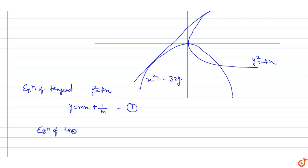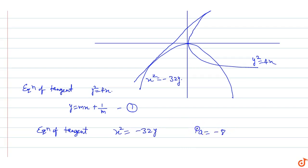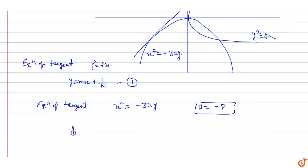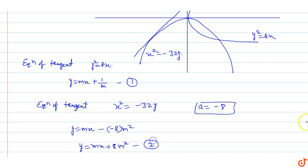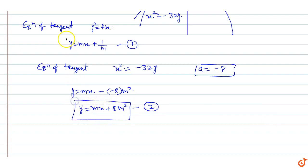The equation of tangent to the parabola x² = -32y is y = mx - am², where a = 8, giving y = mx + 8m². This is equation two.